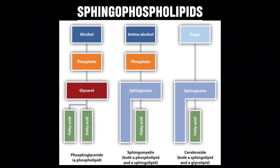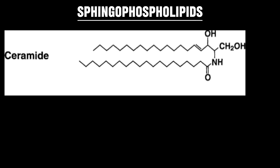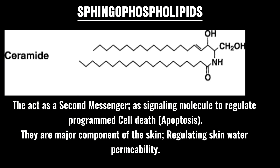Sphingomyelin are important constituents of the myelin sheath and are found in good quantity in the brain and nervous system. Ceramide acts as a second messenger — a signaling molecule — by regulating programmed cell death (apoptosis), cell cycle, and cell differentiation. A ceramide containing a 30-carbon fatty acid is a major component of skin and regulates skin water permeability.